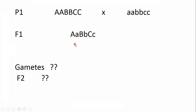The F1 generation is present in heterozygous condition, and then we have to calculate the types of offspring in F2 generation. Before that, we have to find out about the gametes formed by F1 generation. The formula for the number of gametes is 2 raised to the power N, where N represents the number of heterozygous gene pairs in that individual. With three heterozygous gene pairs, we get 2 raised to power 3, which equals 8.